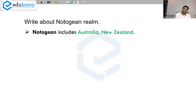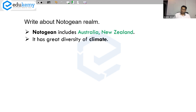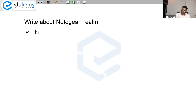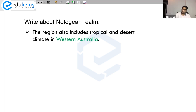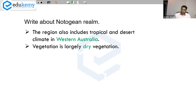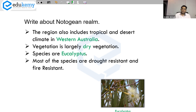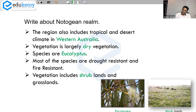What type of climate does it have? A great diversity of climate. Cooler regions such as Tasmania and the southern island of New Zealand, while the region also includes tropical and desert climate in western Australia. What type of vegetation? Vegetation is largely dry vegetation. One of the dominant species are eucalyptus — most of them are drought resistant and fire resistant. Vegetation also includes shrublands and grasslands.